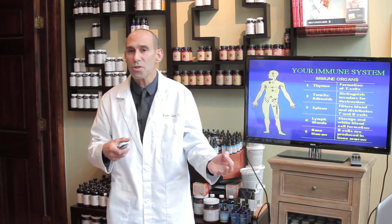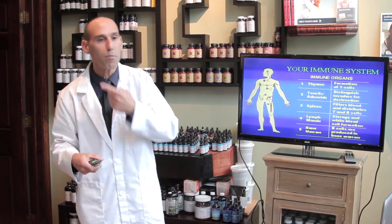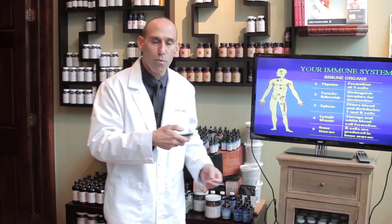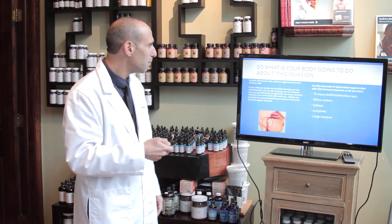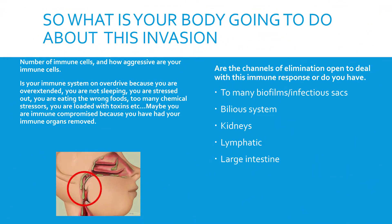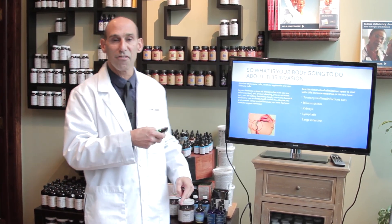Our immune system — where all those cells are made — involves the thymus, your tonsils, adenoids, the spleen, the lymph glands, and the bone marrow. Some people may have had their tonsils, adenoids, or spleen removed, which can leave them immunologically compromised. What really matters when we're invaded is not just how many immune cells you have, but more importantly, the aggressivity of your immune cells. Are your immune cells on vacation, or are they ready to do their job and clean up the debris? We want aggressive immune cells — that's one of the keys to combating viral infection.